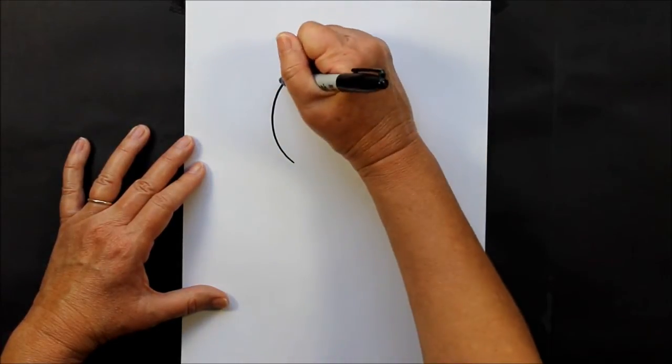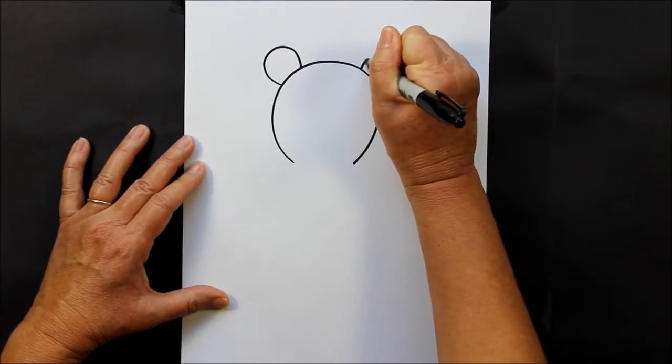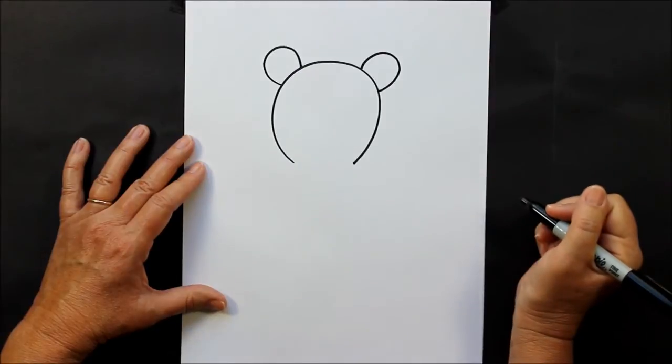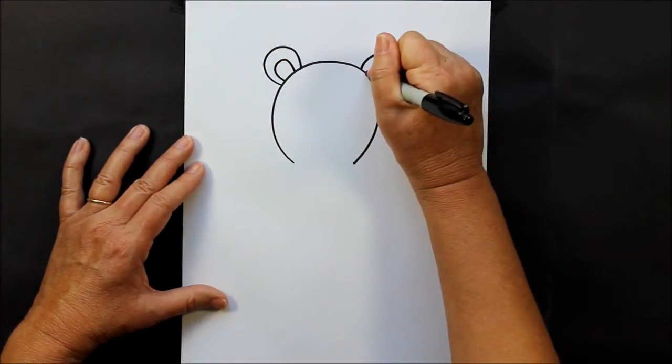And we're going to make some more C's. These are his ears. And remember the C's are kind of like upside down. Inside those C's we are going to make more C's and they're going to be small.